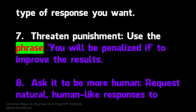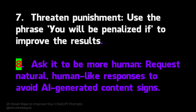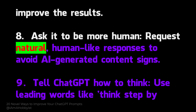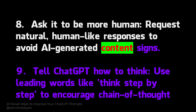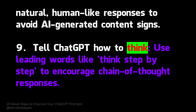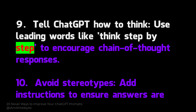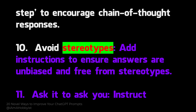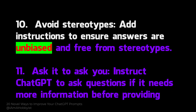7: Threaten punishment — use the phrase 'you will be penalized if' to improve results. 8: Ask it to be more human — request natural, human-like responses to avoid signs of AI-generated content. 9: Tell ChatGPT how to think — use leading words like 'think step by step' to encourage chain-of-thought responses.